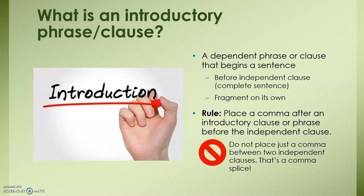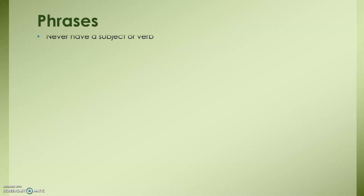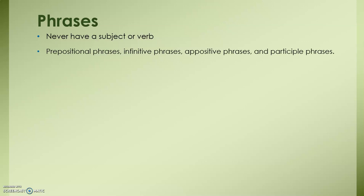Let's look at phrases to begin with. Phrases never have a subject or a verb. Types of phrases include prepositional phrases, infinitive phrases, appositive phrases, and participle phrases. I don't want you to get too hung up on knowing which type of phrase is which for this lesson, but let's review some examples anyway.